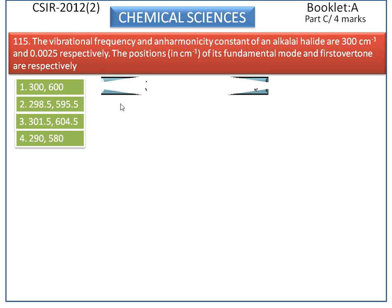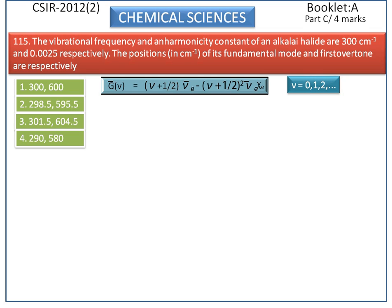This is the general formula for allowed vibrational energy, where nu values are 0, 1, 2, etc. Here, nu-e is the oscillator frequency and chi-e is the anharmonic constant. This is the anharmonic oscillator having the positions of ground state, first excited state, and second excited state.